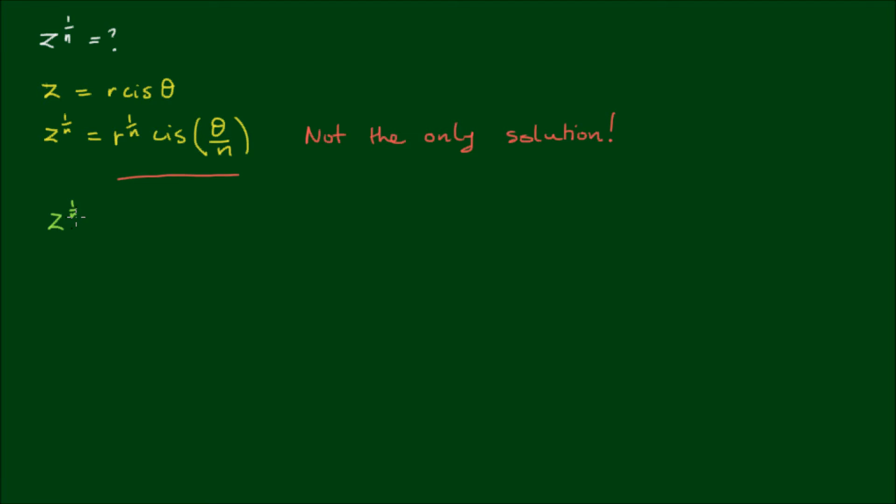What does this mean? If I raise z^(1/n) to the nth power, wouldn't I get r cis θ back? This is certainly true. However, there are other complex numbers, say w, which when raised to the power of n, could also equal z. So there is no unique solution—there are multiple solutions.